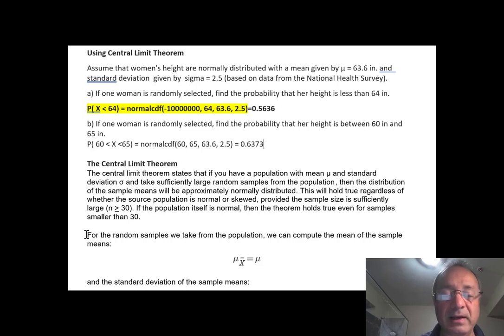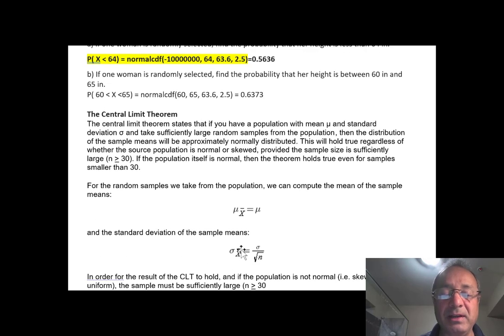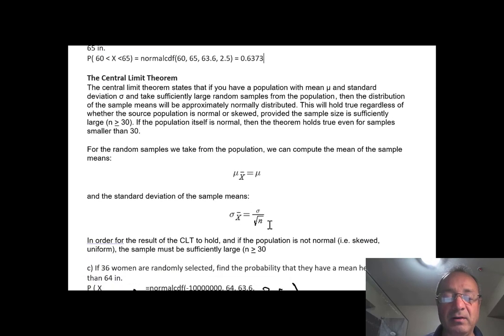And the interesting outcome is the mean of the sample means is going to be exactly the same as the mean of the original population, but the standard deviation is going to be a lot smaller, which is the original population divided by square root of n.